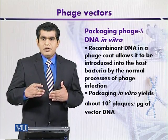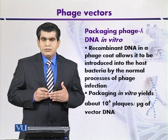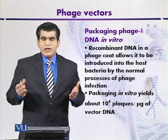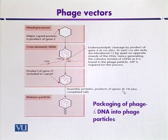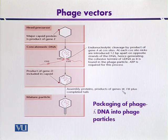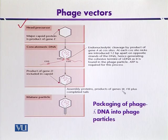This diagram indicates the in vitro packaging of lambda DNA. In the first step, the requirement is the head precursor, and the head precursors are synthesized by gene E. In the next step, the concatemeric DNA is inserted into the head.